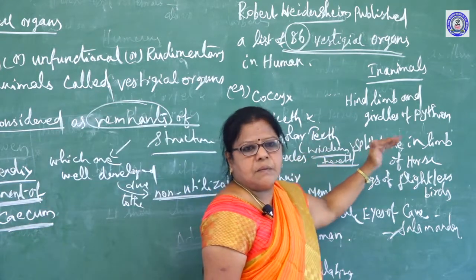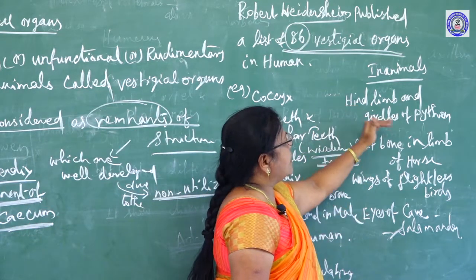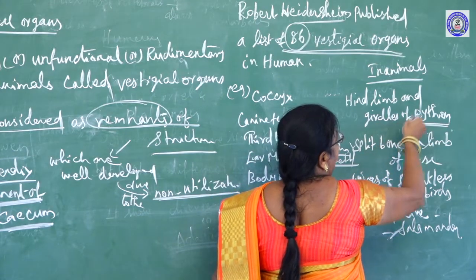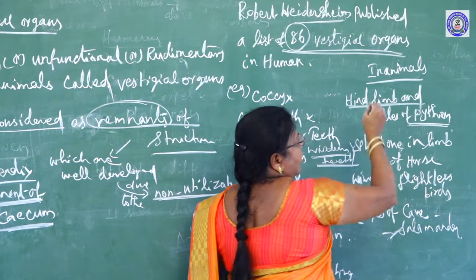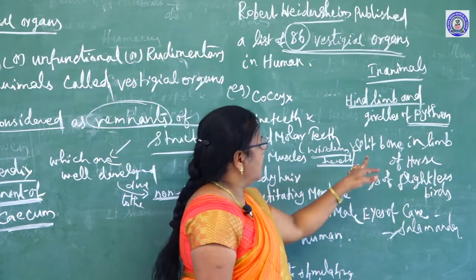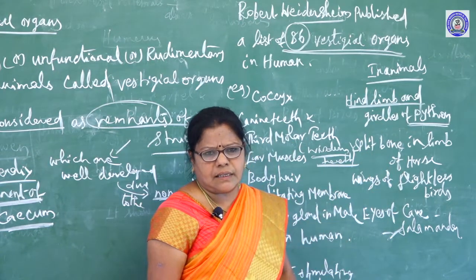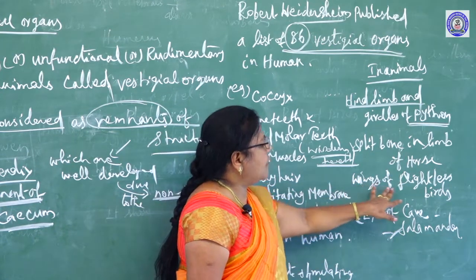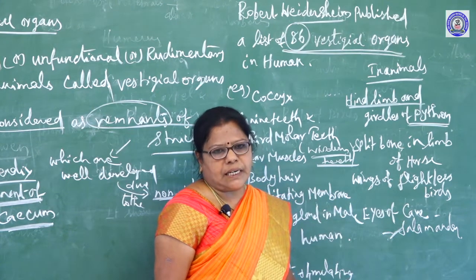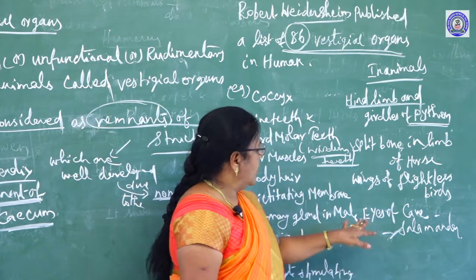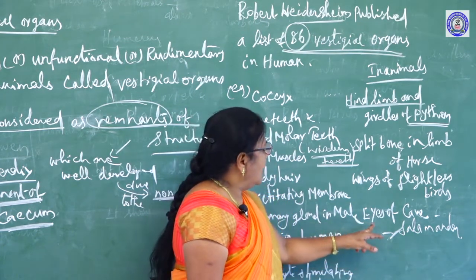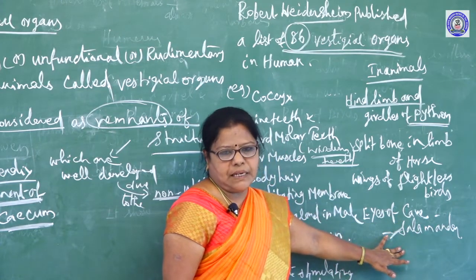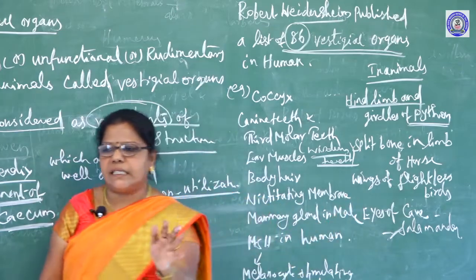Some examples in animals also: the hindlimbs and girdle of the python are absent because they do not use those organs; splint bone in the limb of the horse; wings of flightless birds; eyes of cave salamanders — these are all examples of vestigial organs.